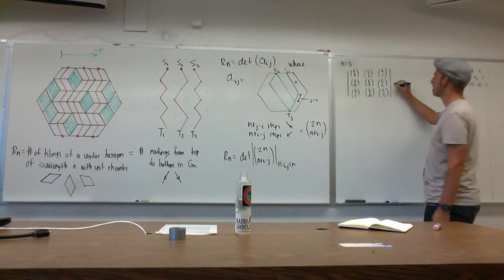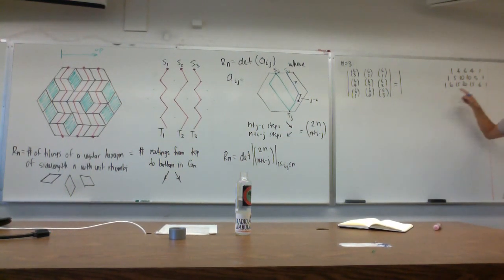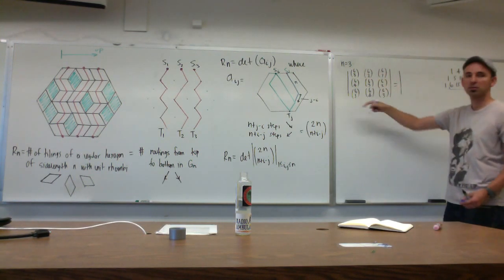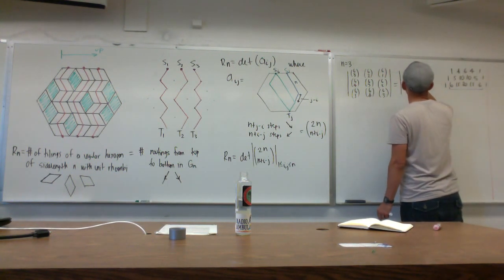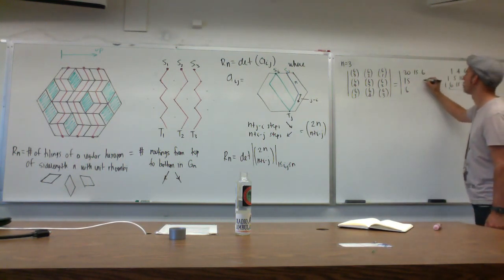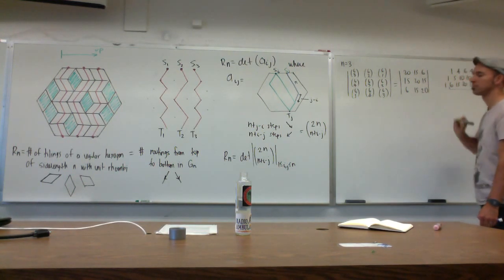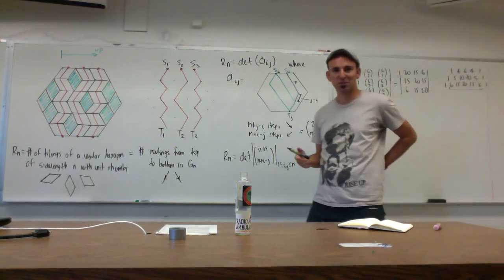If you look at it, it's extremely simple — you just take a row of Pascal's triangle, where 6 choose 1 up to 6 choose 5 appear in order: 6, 15, 20, 15, 6. Then you keep going: 15, 20, 15, 20. It's a really beautiful determinant.